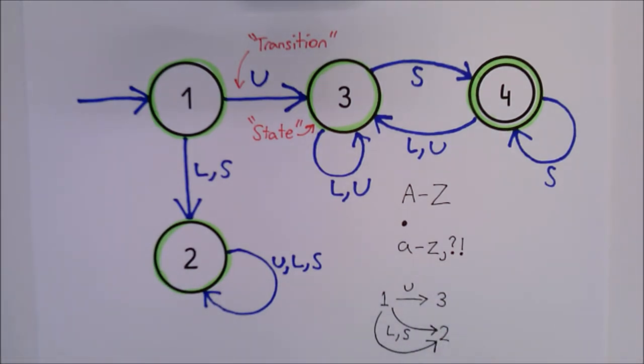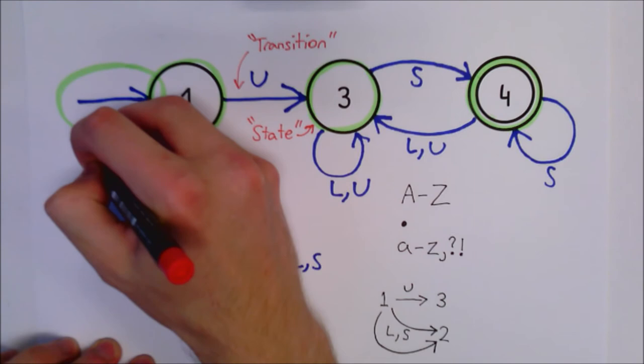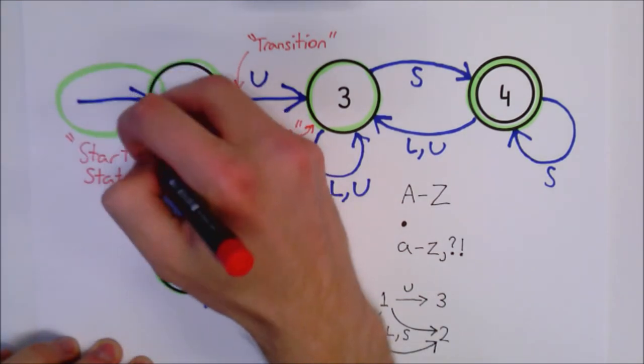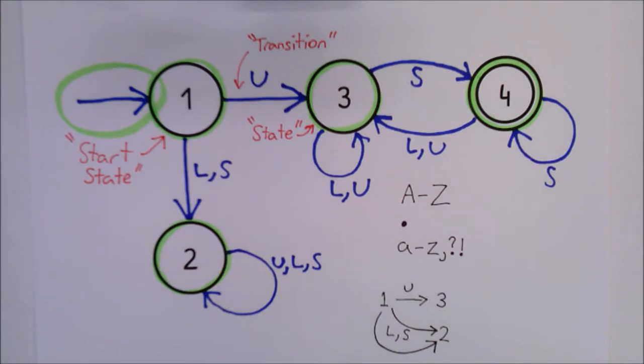Now note that the arrow on the far left is not labelled and does not transition between states, instead only entering state 1. This tells us that state 1 is the start state. So, whenever we run through this automaton, we always start from here.